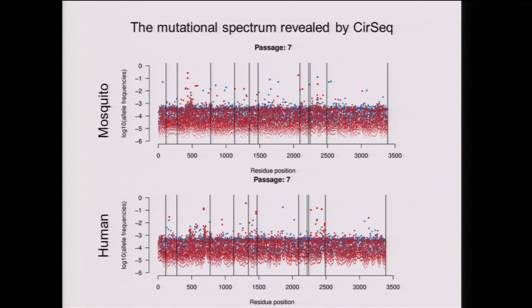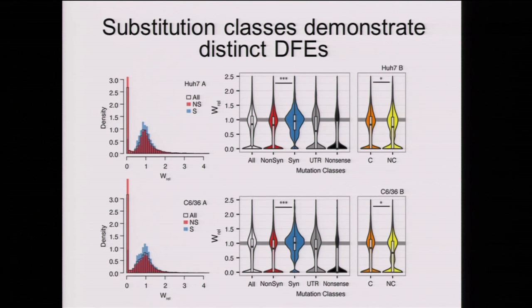We looked at the fitness of these different alleles by examining frequency trajectories and assigning fitness values. This is the distribution of fitness effects, or DFE. As expected, you see a peak at neutrality at 1 and a large peak at lethality at 0. Synonymous mutations are enriched at the neutral peak in both populations, and there's an enrichment of non-synonymous mutations in the lethal peak.